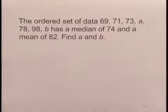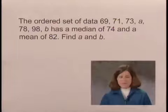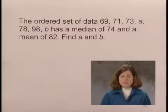The ordered set of data 69, 71, 73, a, 78, 98, b has a median of 74 and a mean of 82. Let's find a and b.